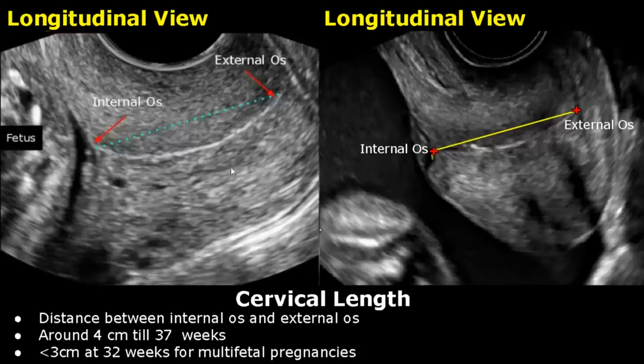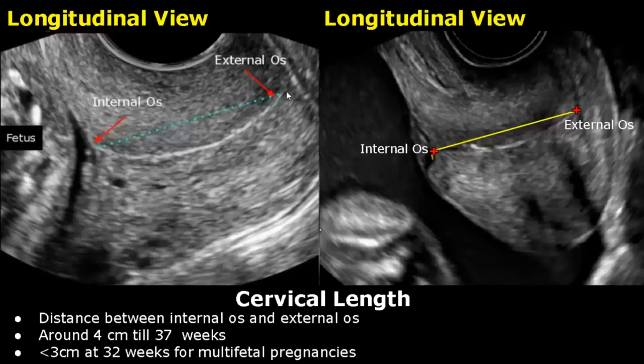The cervix is seen in longitudinal view. One caliper is placed at the internal os — the junction towards the fetus — and the other caliper is placed at the external os, where the endometrium ends. The normal cervical length is around 4 centimeters until 37 weeks gestation. In twin pregnancies it can be around 3 centimeters or less at 32 weeks.